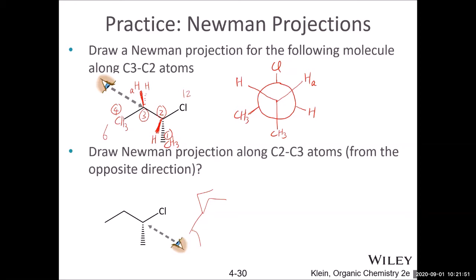What about drawing the Newman projection along 2 to 3? That means carbon 2 is close to you and carbon 3 is away. You start the same way — draw the missing hydrogens. This is a methyl group, don't forget. The chlorine is a plain line, meaning it is in the plane of the paper. The methyl group is away from you (dashed). The missing bond should be the wedge hydrogen.